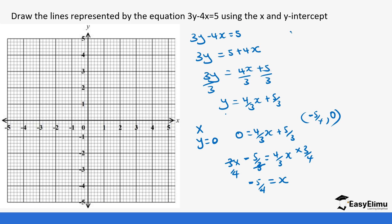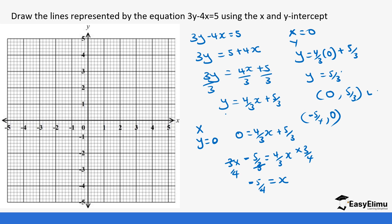For the y-intercept, x = 0: y = (4/3)(0) + (5/3) = 5/3. So the y-intercept point is (0, 5/3). We have our two points: (-5/4, 0) and (0, 5/3). Plot these in your graph. Remember, you can get more than two points — even three or four — so that your line is more accurate. Always use a ruler to draw the line.